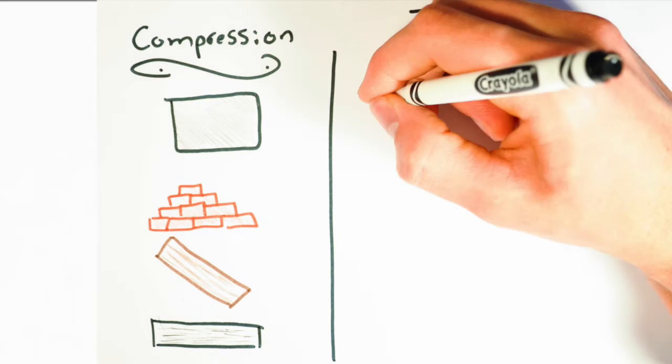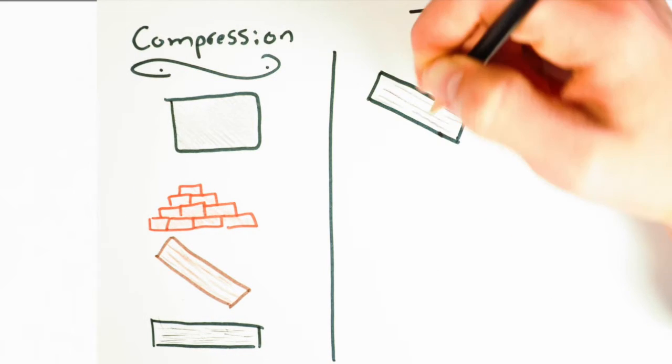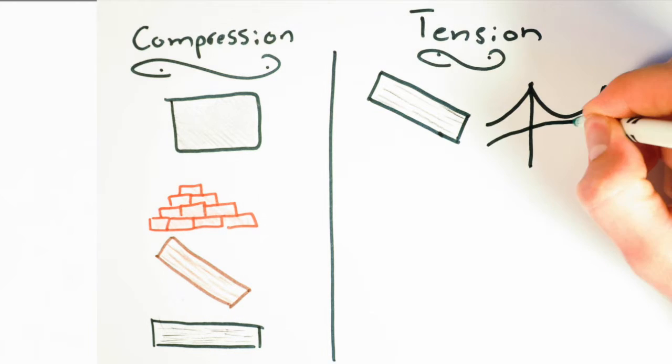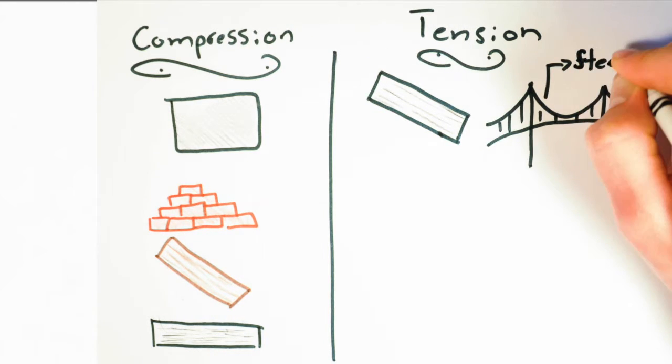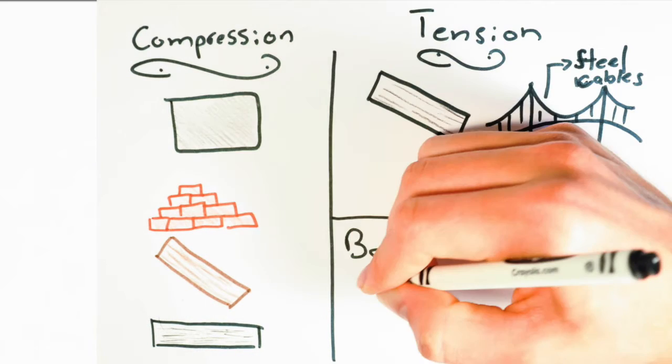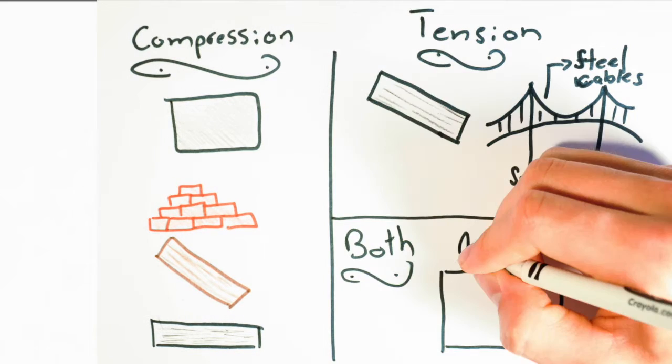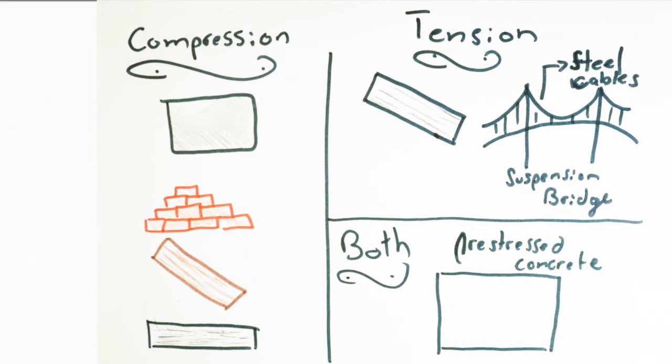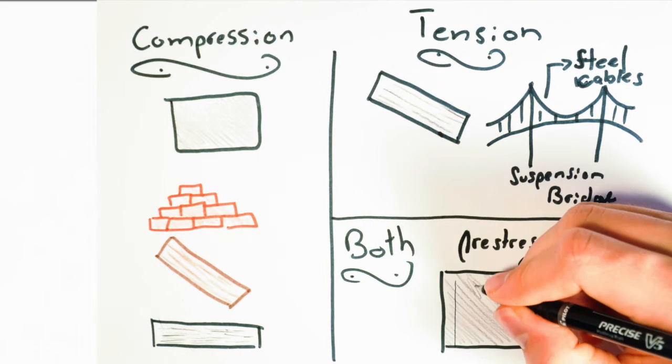Some materials such as steel, flexible yet strong, can carry tensile forces. There are also materials that can carry both tensile and compressive forces. Pre-stressed concrete is one of these materials. Pre-stressed concrete has steel rods running through it so it can withstand not only a compression force but a tension force as well.